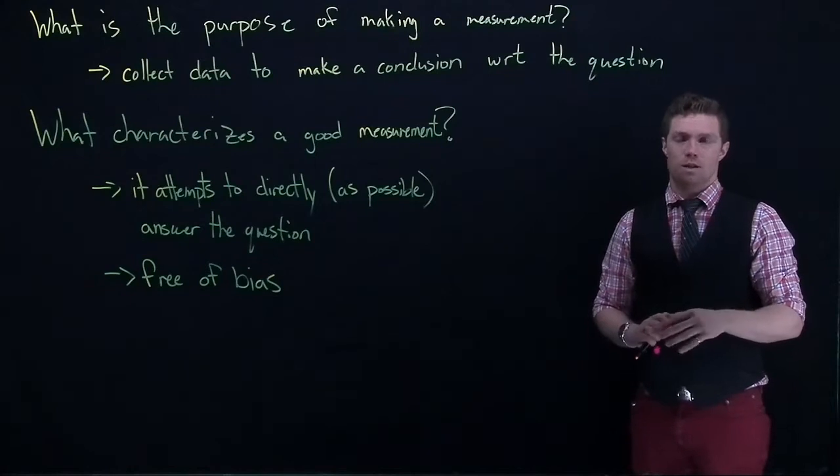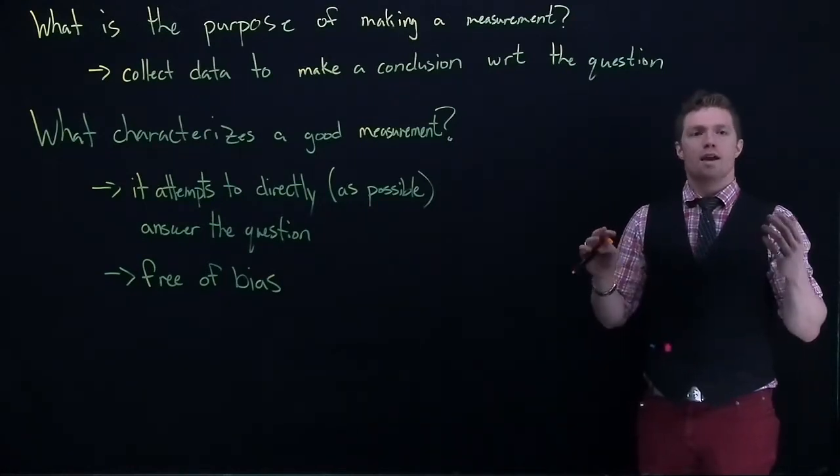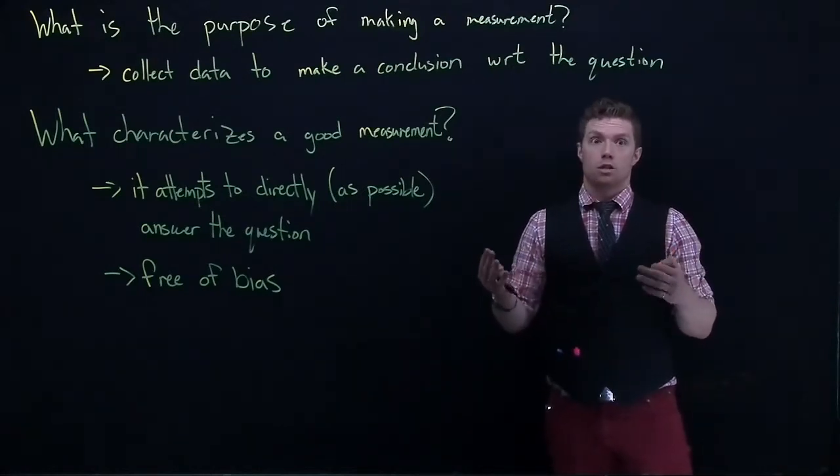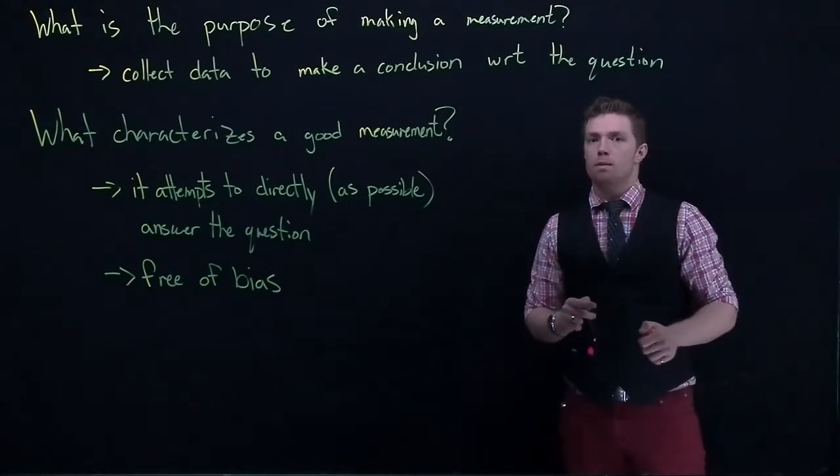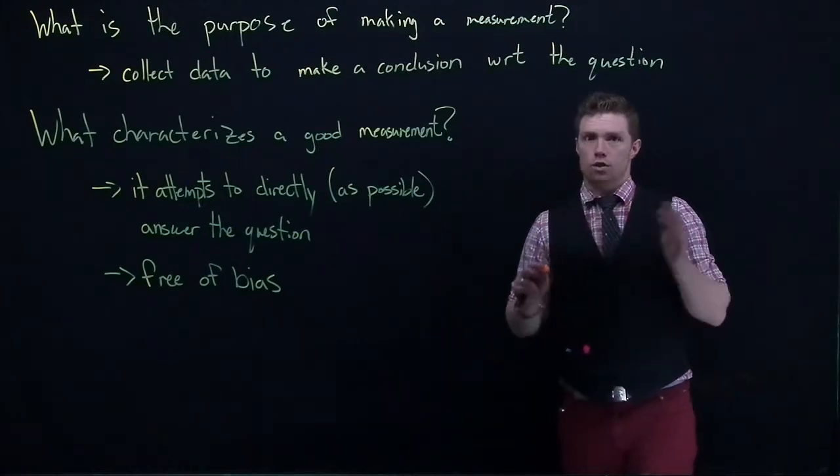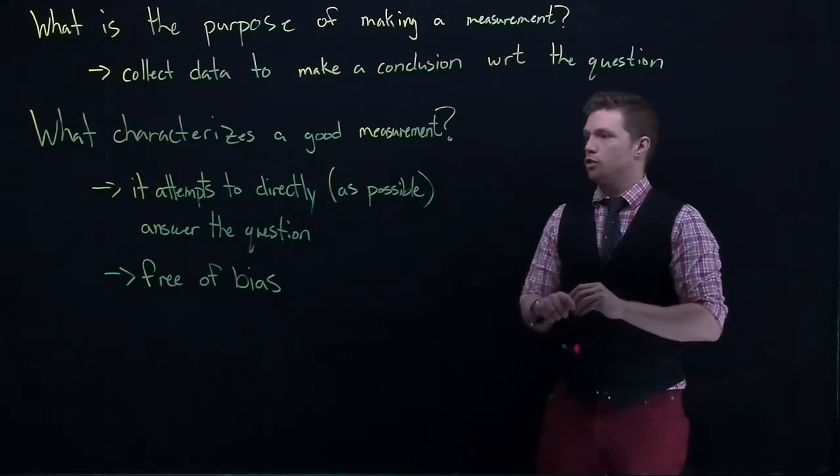So for example, there are things that are easy to measure. So if I want to say I want to know what's the average weight of members of the football team. All right, that's not hard to do. You put the members of the football team on a scale, right? And the measurement is trying to directly answer this question. What's the weight? Put you on a scale, I can tell you the weight of every individual person. That's great.